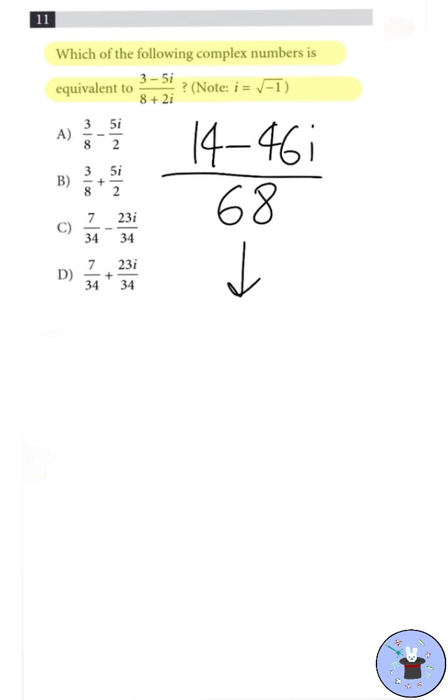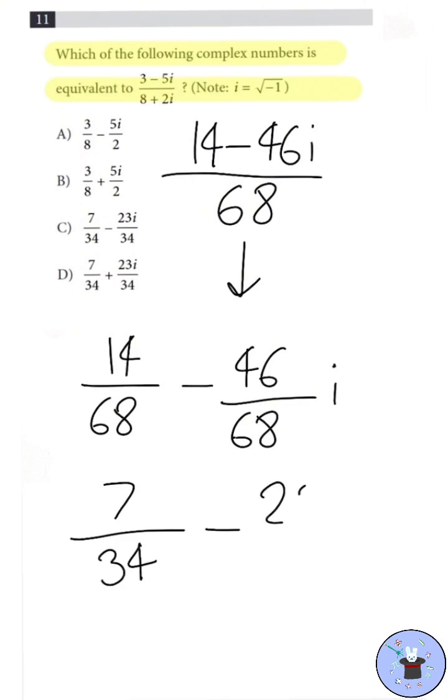Now, to get our final answer, we need to simplify this even further by putting each value over 68. 14 divided by 68 minus 46i over 68. Now, we simplify. We get 7 over 34 minus 23 over 34i.